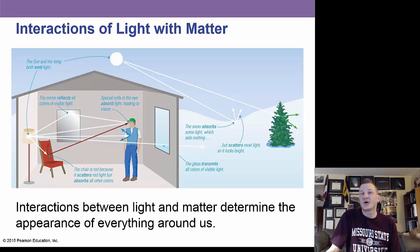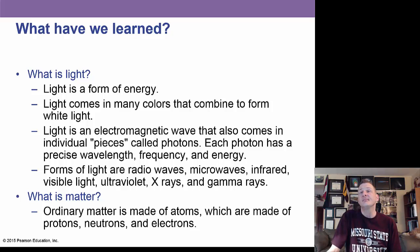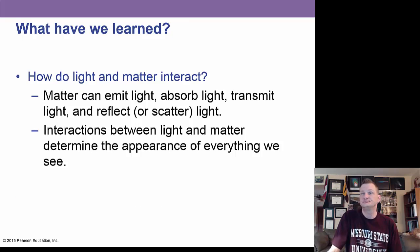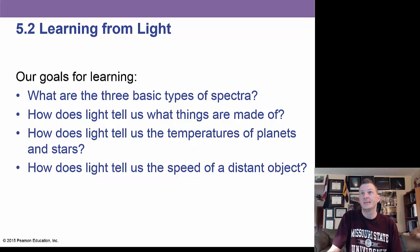The interactions between light and matter determine the appearance of everything around us. We learn light is a form of energy. It comes in many colors that we can put together in the electromagnetic spectrum. And ordinary matter is made of atoms. Matter can emit light, absorb light, transmit, or reflect, or scatter it. And these interactions tell us everything about us that we see.